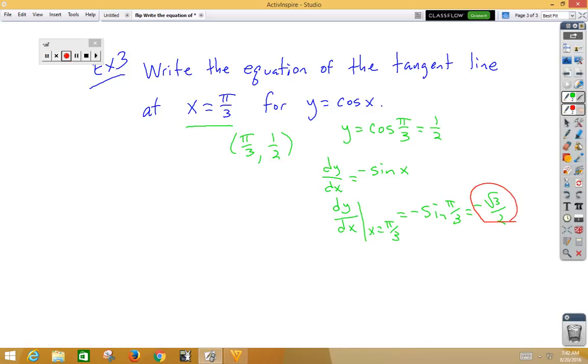Here's my slope. Here's my point. So I have y minus 1 half is equal to negative radical 3 over 2, x minus pi thirds.